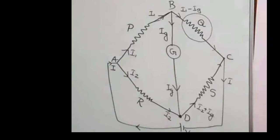We have a figure of the Wheatstone Bridge. We have four resistors in the circuit. The four resistors are P, Q, R, and S. We have a battery supply connected to the circuit. P, Q, R, S are the four resistors, and these are known resistances.